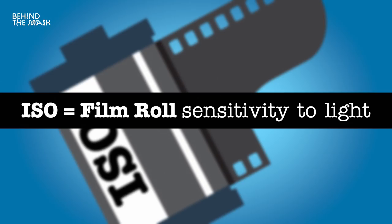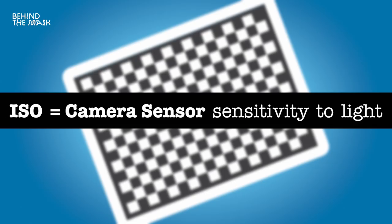ISO is the film sensitivity to light. Nowadays with digital cameras, ISO is the sensitivity of your camera sensor to light — essentially the same, just digital. A low ISO number means your camera sensor is less sensitive to light, so you will have a clearer image, you will introduce less noise, and you will darken down your image, bringing your exposure down.